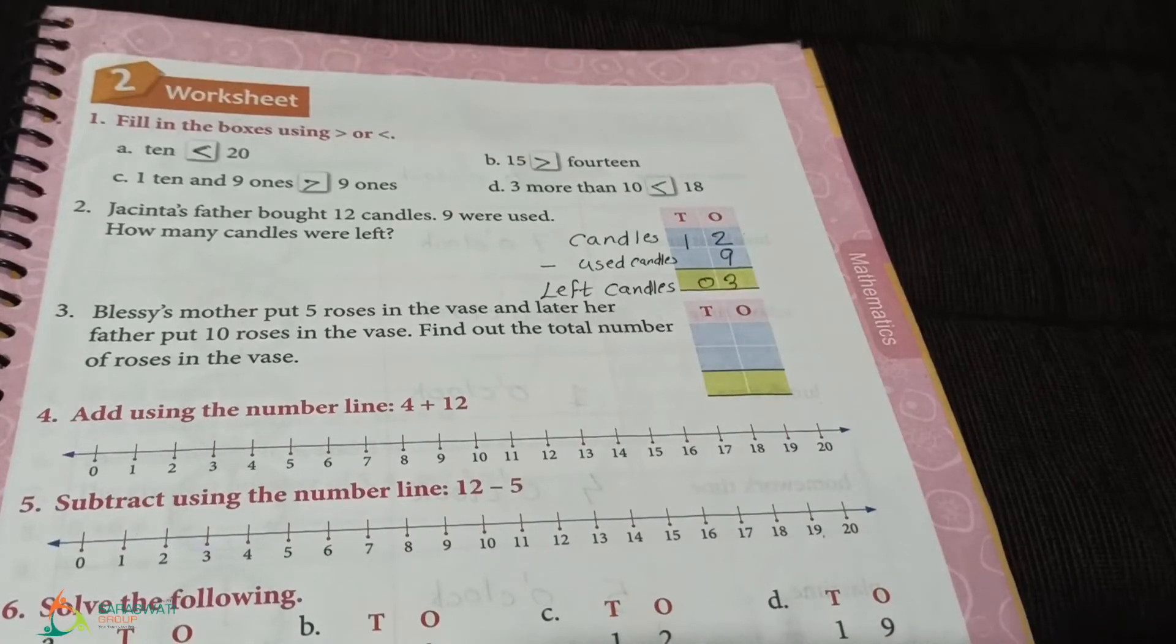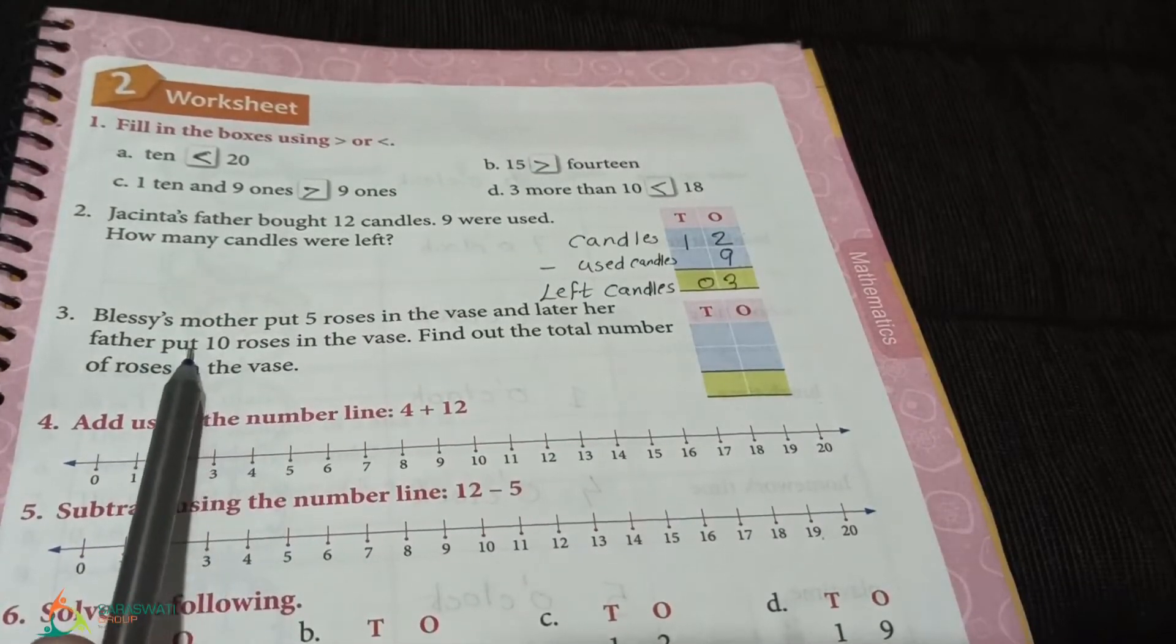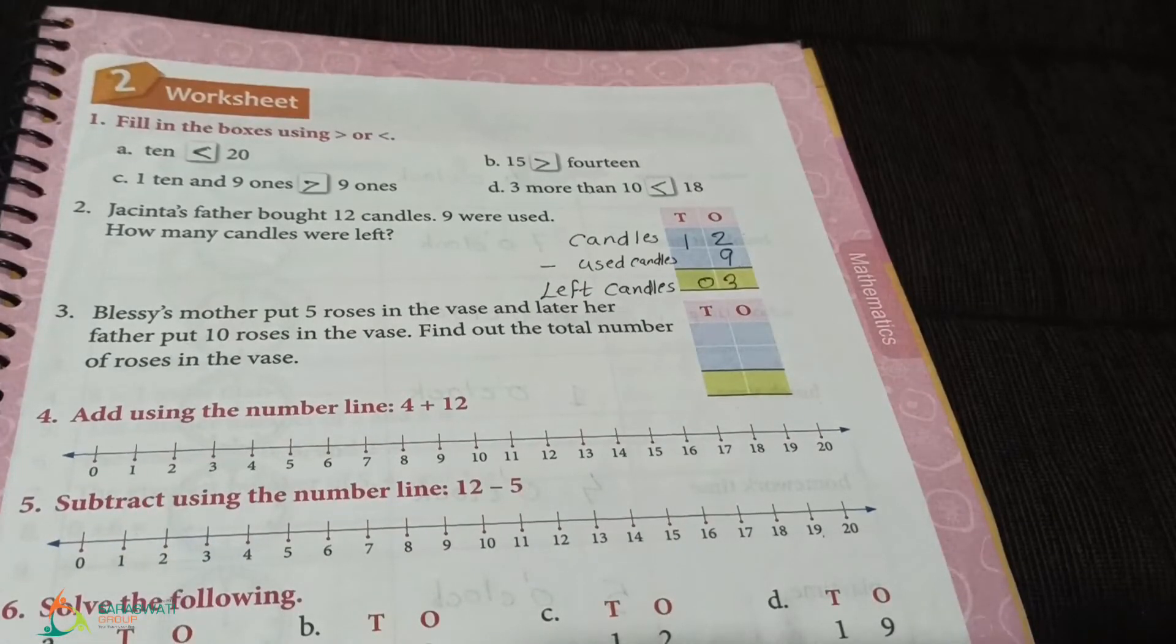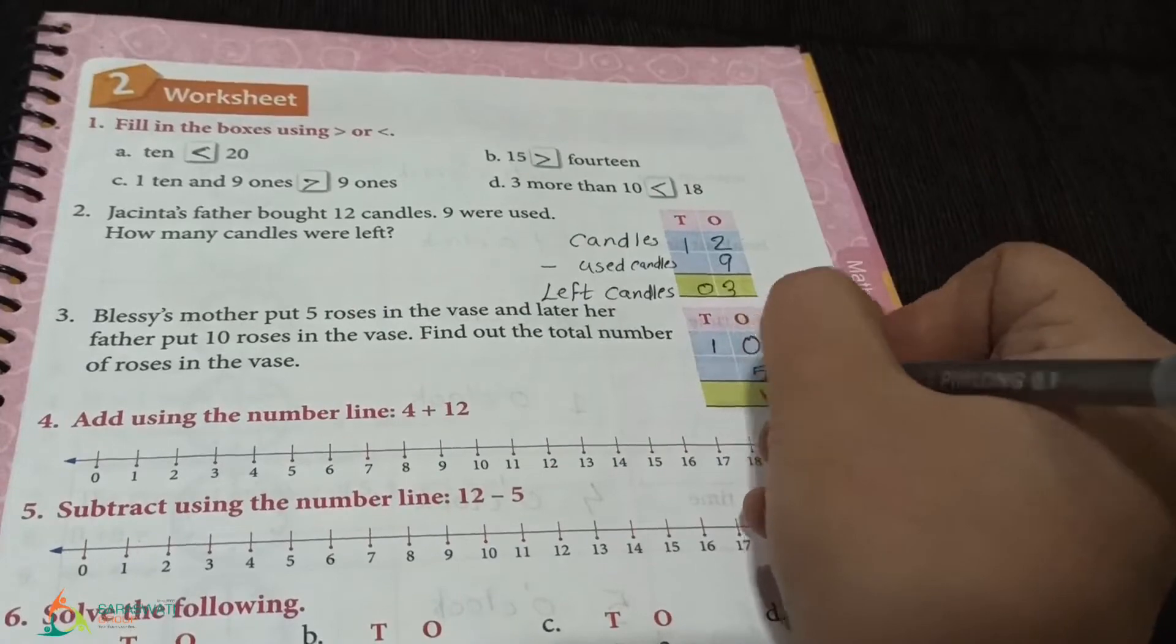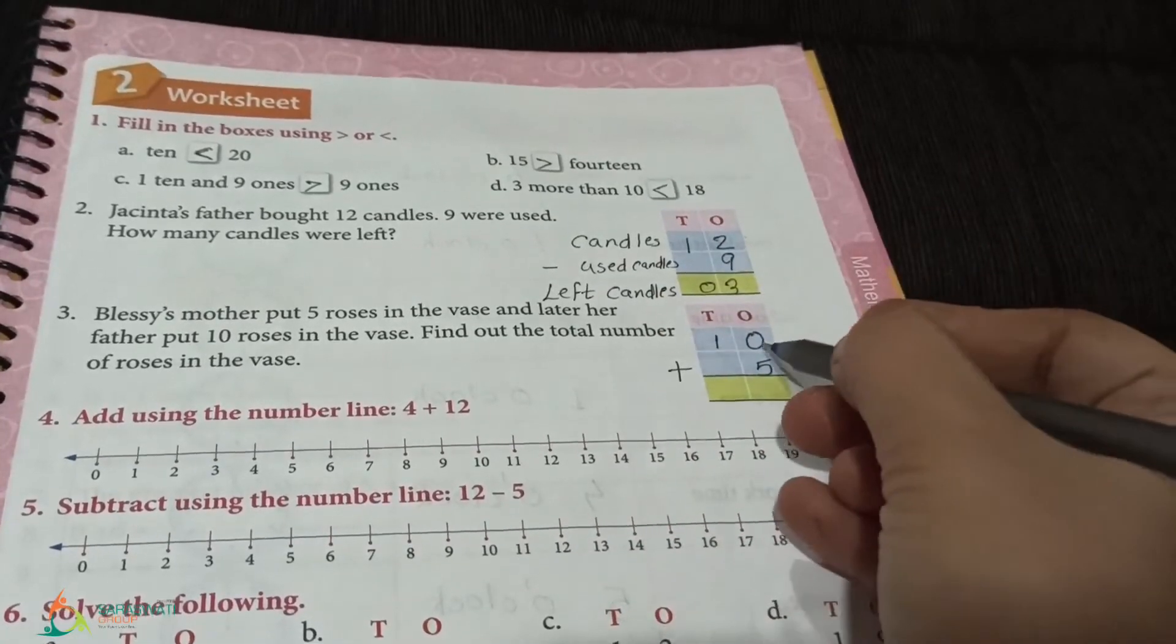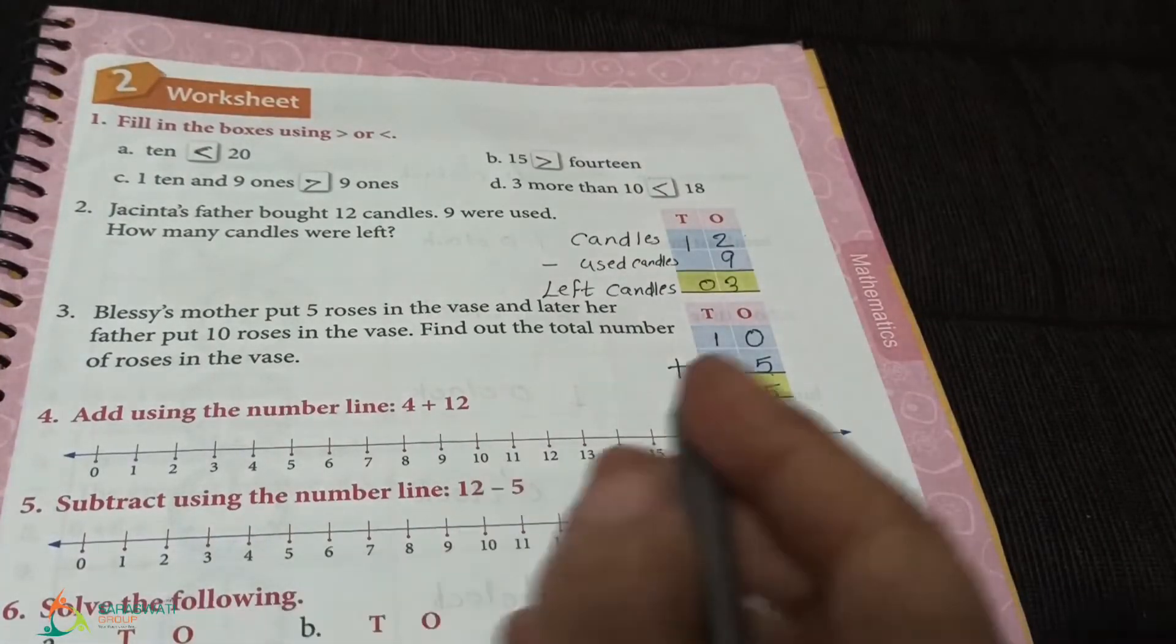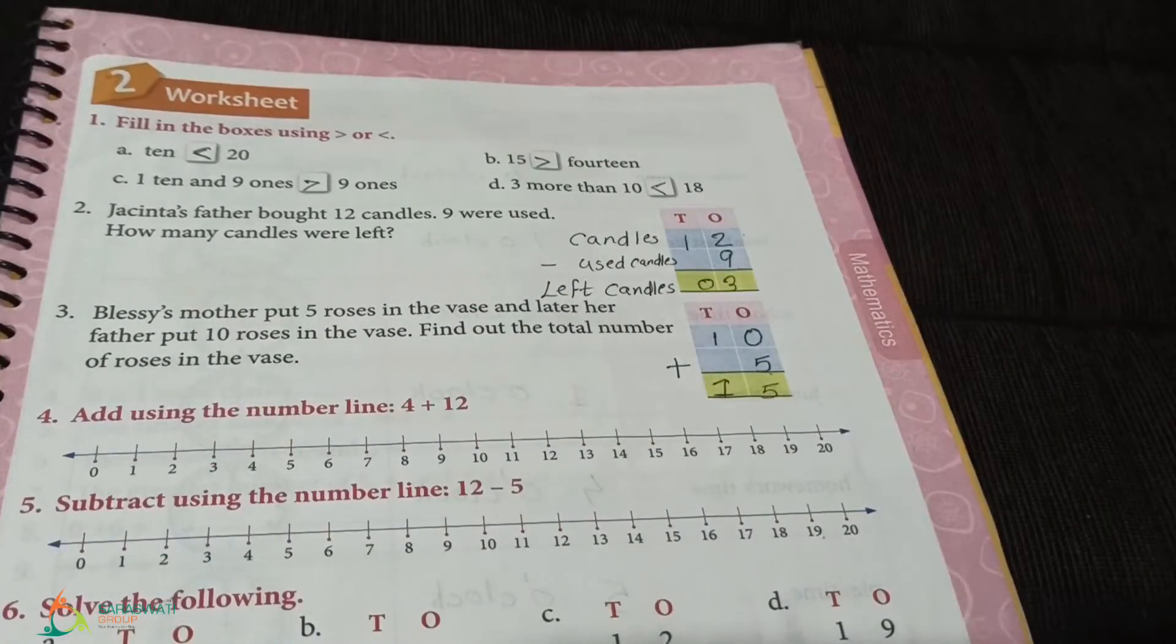Next, Blessie's mother put 5 roses in the vase and her father put 10 roses in the vase. Find out the total number of roses. We will write the bigger number first, 10, and then 5. We have to find the total, so this is addition. We will add them. 0 plus 5 is 5, and 1 plus 0 is 1. So, answer is 15.